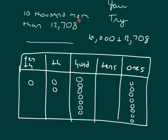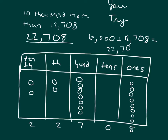To model that within our chart, 10,000 more means we add another disk in the 10,000s place. So our number in standard form would be 22,708. We'll write that on the line, placing a comma where it needs to go. Our number sentence is 10,000 plus 12,708 equals 22,708. The largest unit was in the 10,000s place, and it changed from 1 to 2 because we were going 10,000 more.